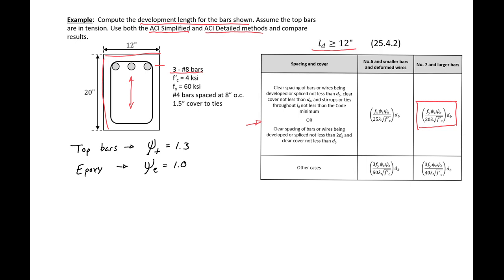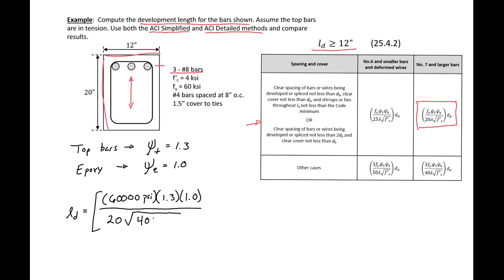Now we plug all of our known values into our development length expression. We'll have 60,000 psi as our yield strength, 1.3 as our top bar factor, 1.0 as our epoxy coating factor, divided by 20 times the square root of 4,000 psi concrete, times the diameter of a number eight bar, which is one inch. Remember that ACI uses psi as our units for both steel and concrete. This gives us a development length of 61.7 inches using the ACI simplified procedure.